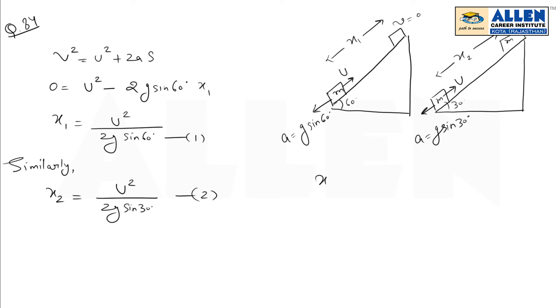Now we have to find their ratio x1:x2, which can be written as u²/(2g sin 60) divided by u²/(2g sin 30). So sin 30/sin 60 can be written as (1/2)/(√3/2). Cancel out 2s, the ratio of x1 to x2 is 1:√3. This is the right answer.